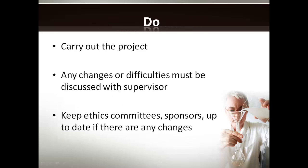We've considered the method stage of our four steps to success, and the next step is what to do — actually carrying out your project. This is the most exciting part, because you've finally conceived an idea, figured out your methods, and now you're actually doing it. You need to ensure that you're flexible with the project. Quite often when it comes to actually carrying it out, you'll find that you hit a wall, and you need to be flexible enough to alter your research question so you still get significant results. Discuss any changes or difficulties with your supervisor, and keep the ethics committee and sponsors up to date if there are any changes.